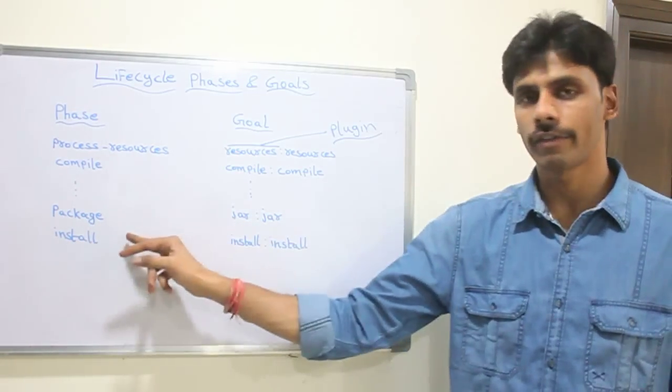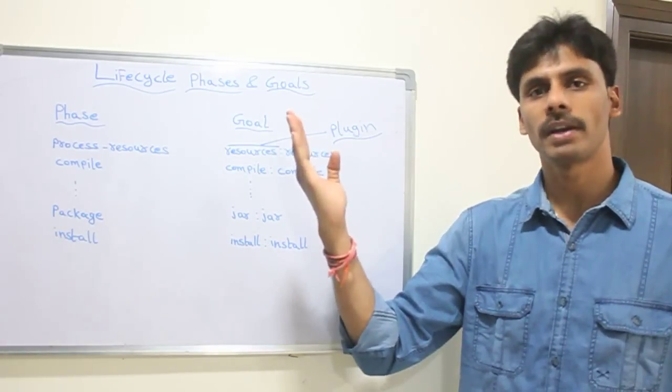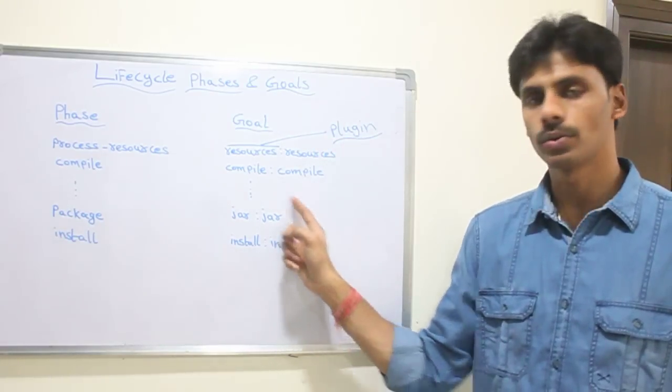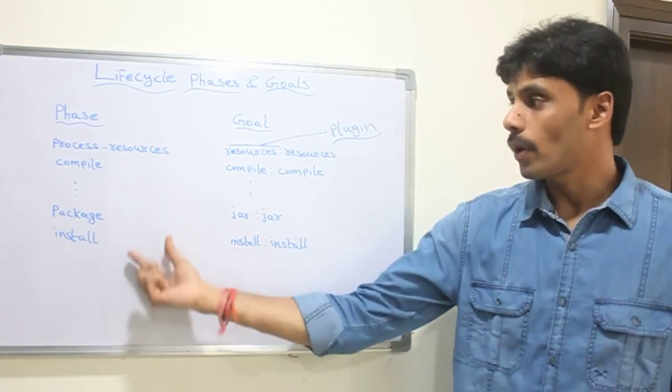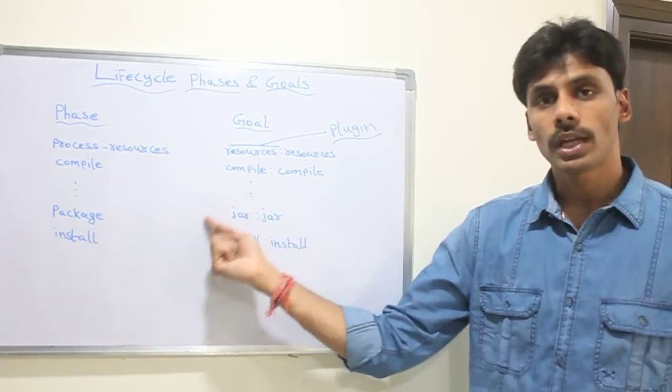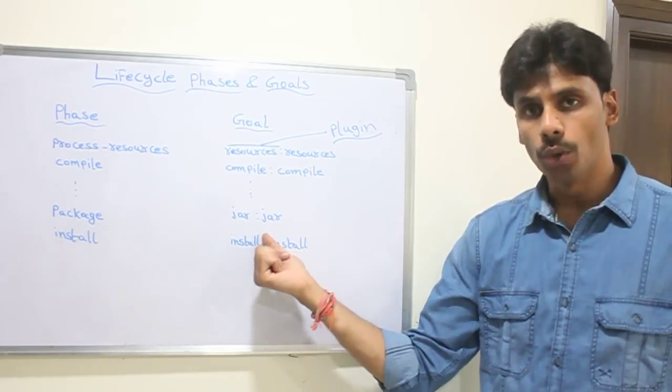No matter whether you execute a goal or a phase, it is going to execute all the previous phases up to the phase to which that goal is bound. And depending on the type of project, maven knows which lifecycle phase should be bound to which goal.